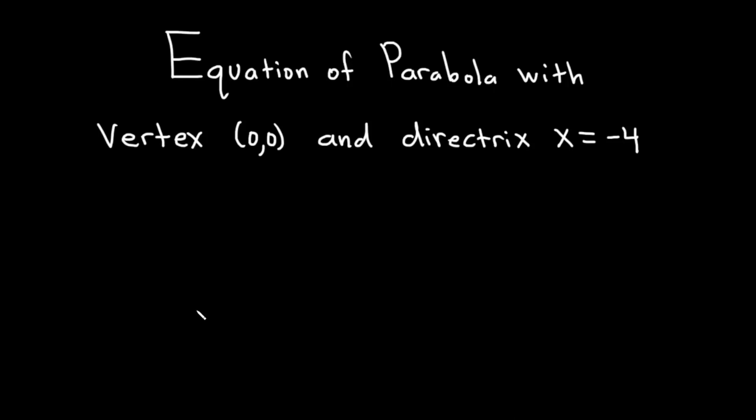Hello. In this video, we're going to do a math problem. We have to find the equation of a parabola with vertex (0,0) and directrix x equals negative 4. Let's go ahead and work through this carefully. Solution.